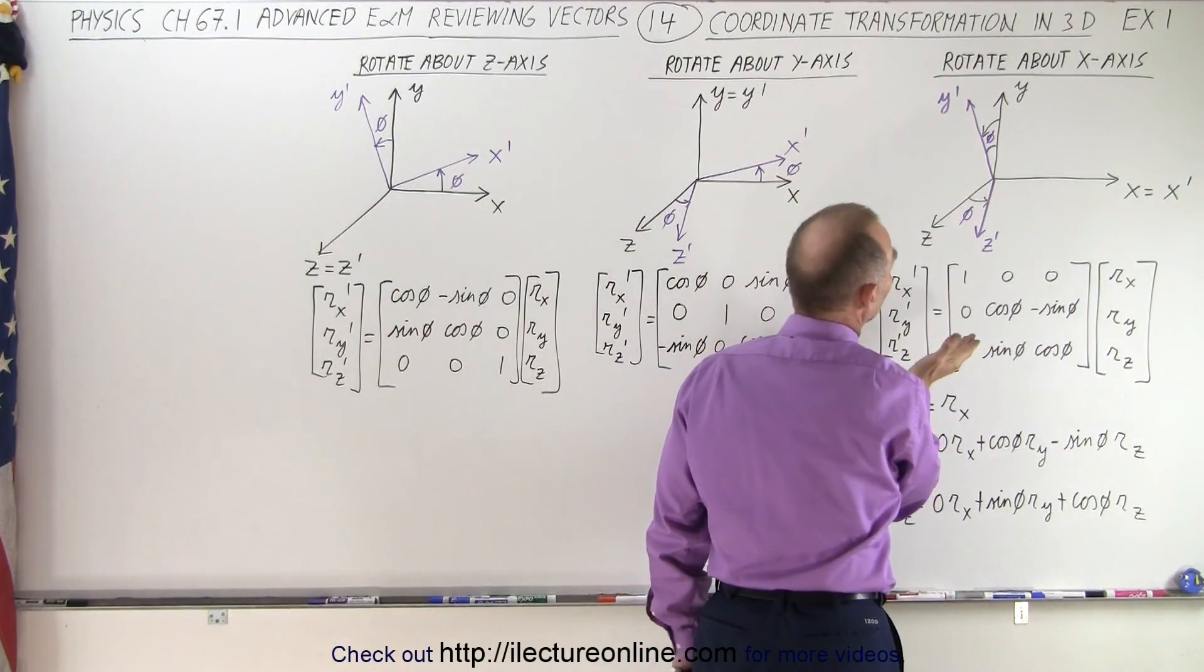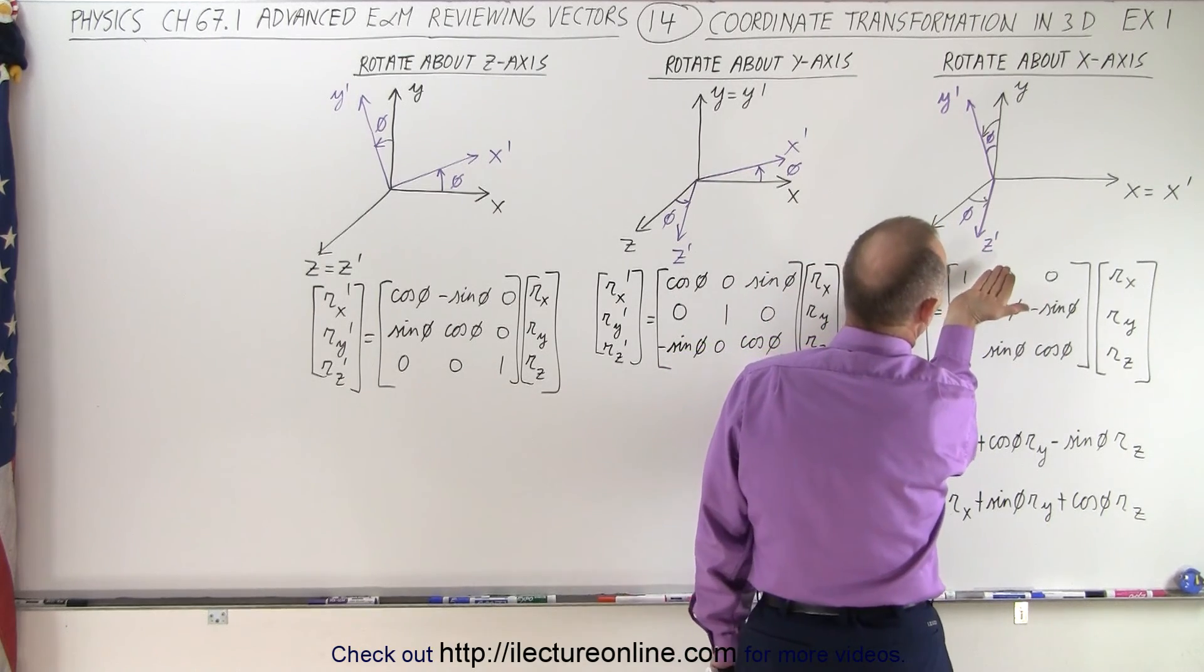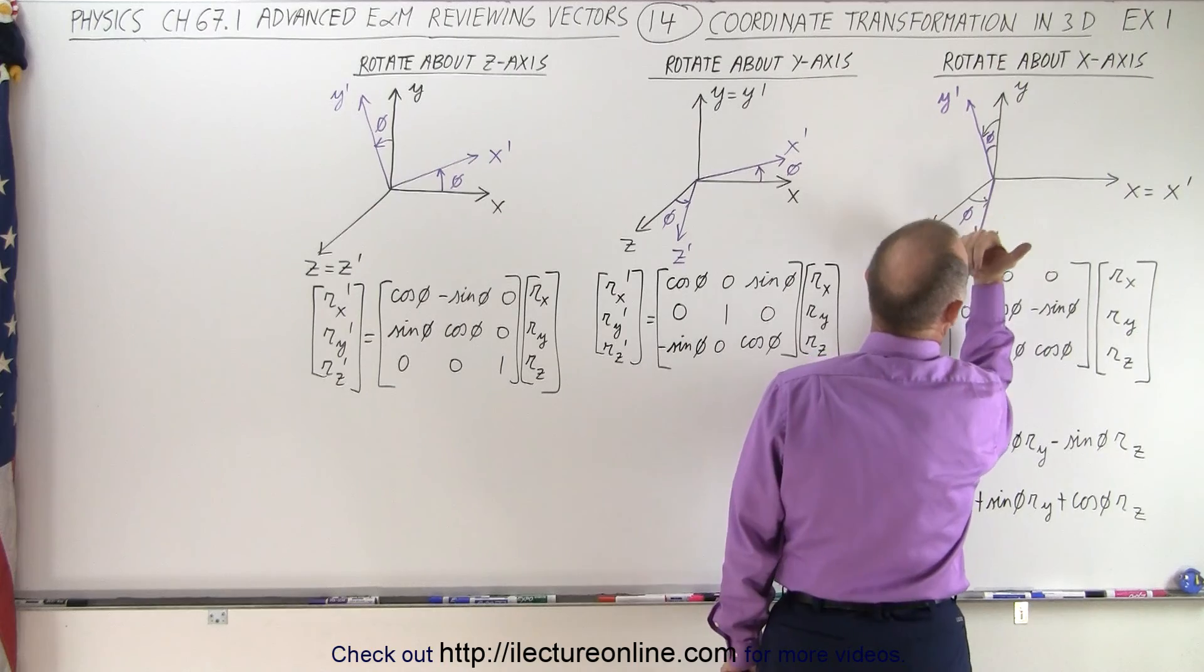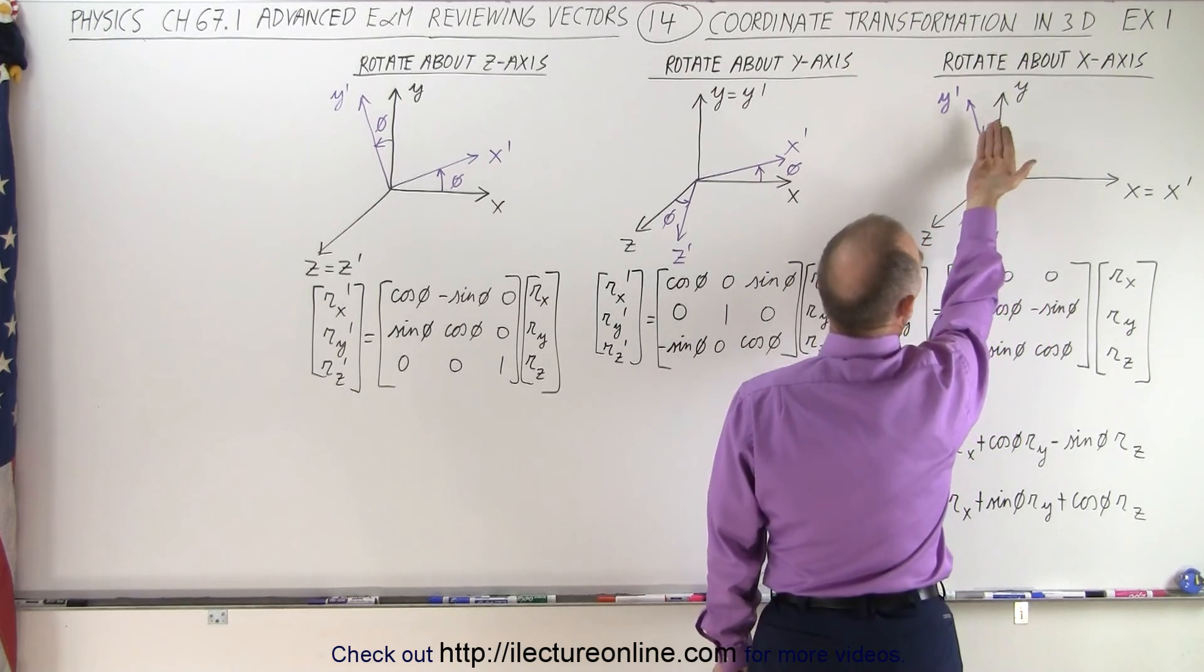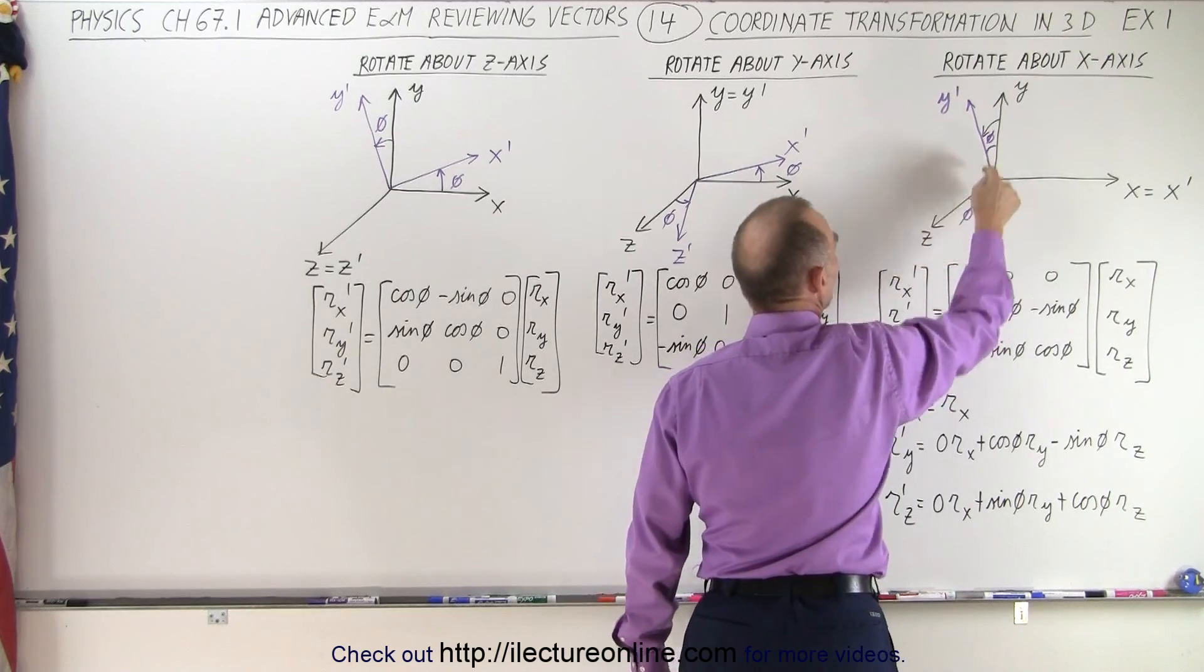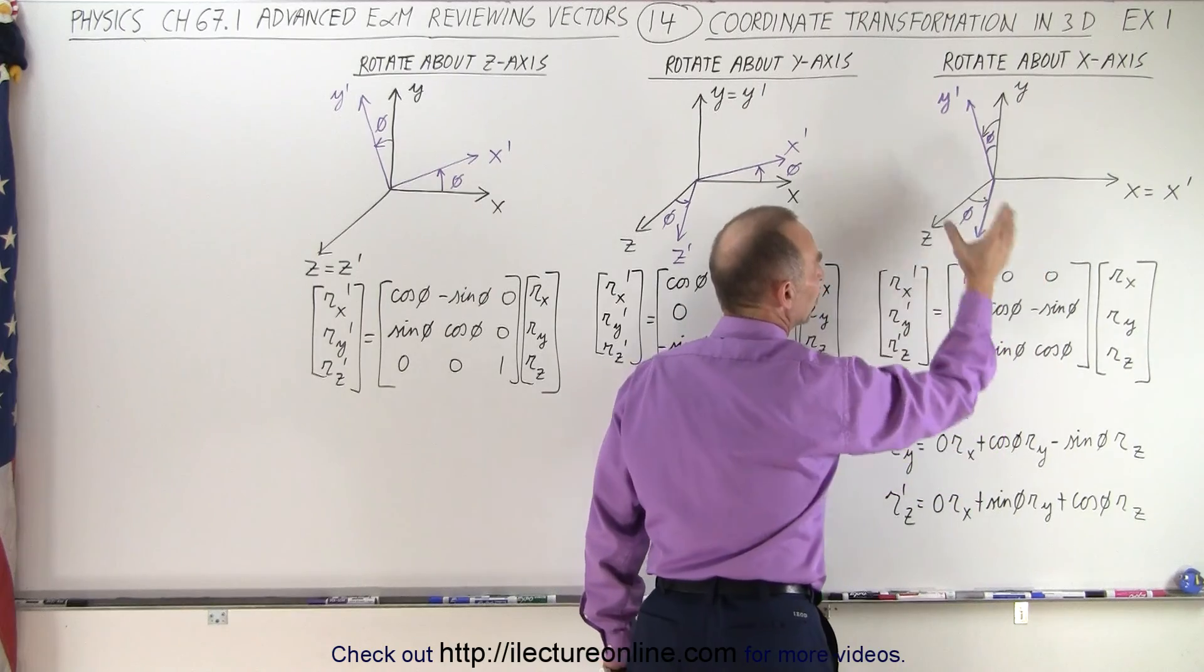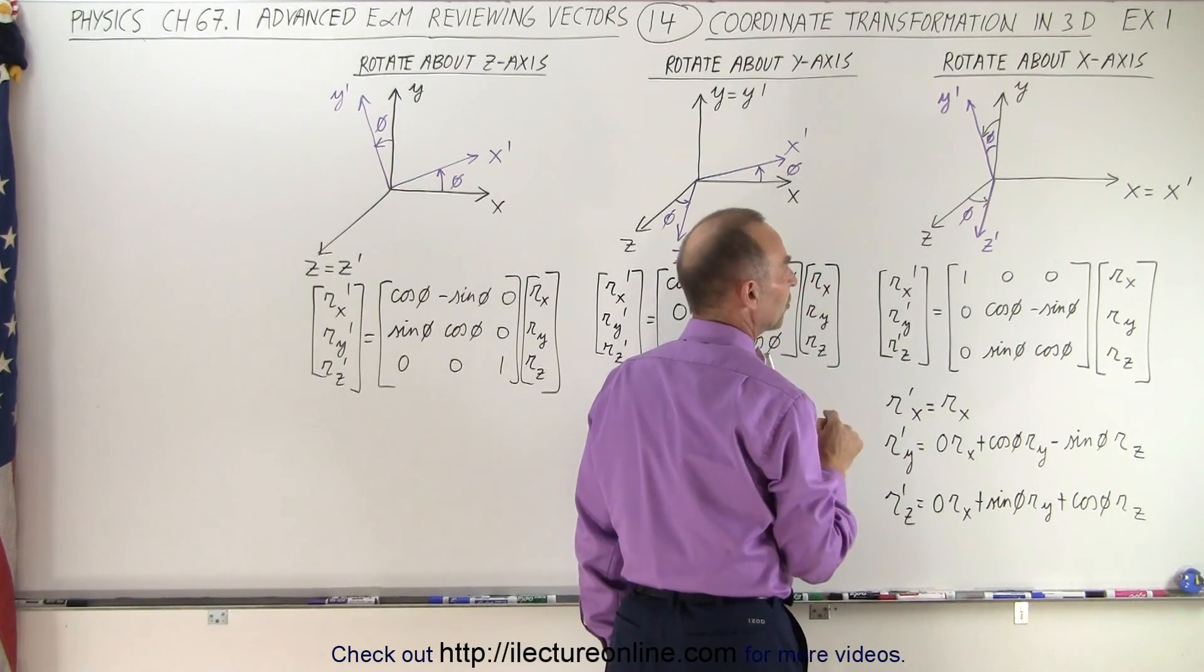In the first case we're going to rotate about the X axis. So if you put your thumb in the direction of the X axis, notice that the Y axis and the Z axis will rotate like this. So Y is going to come down and Z is going to go down as well. And we rotate it to the angle of phi and then we have the transformation matrix right here which represents that particular transformation.